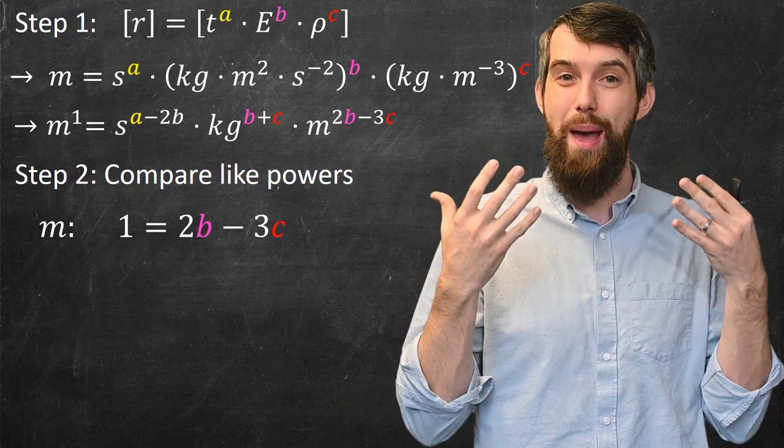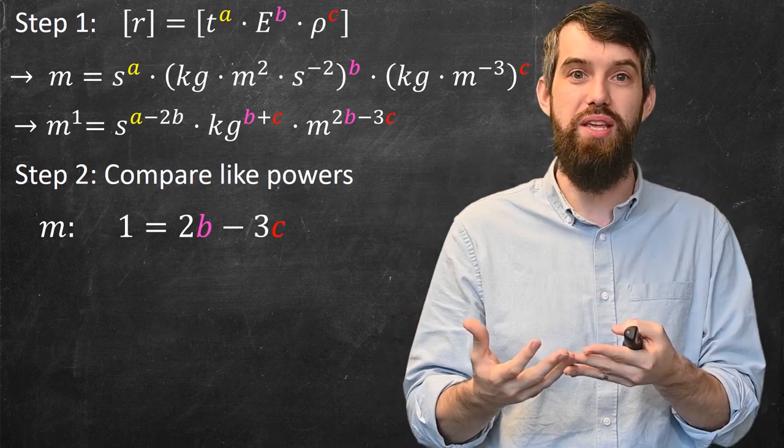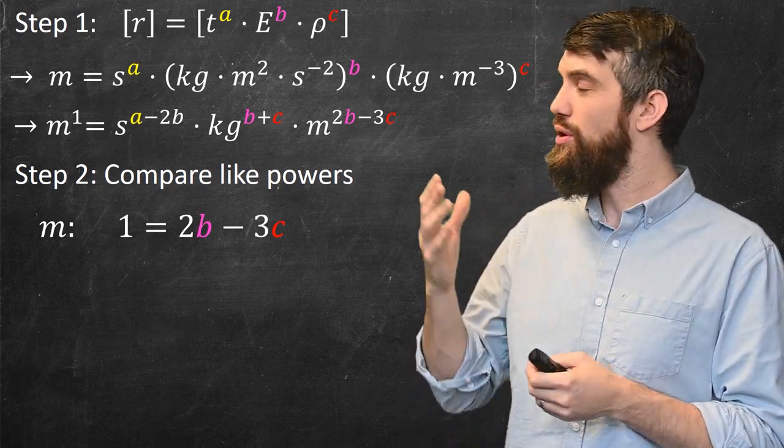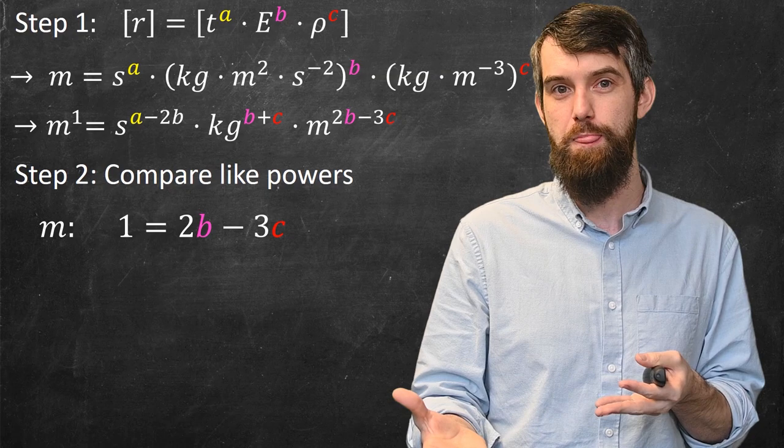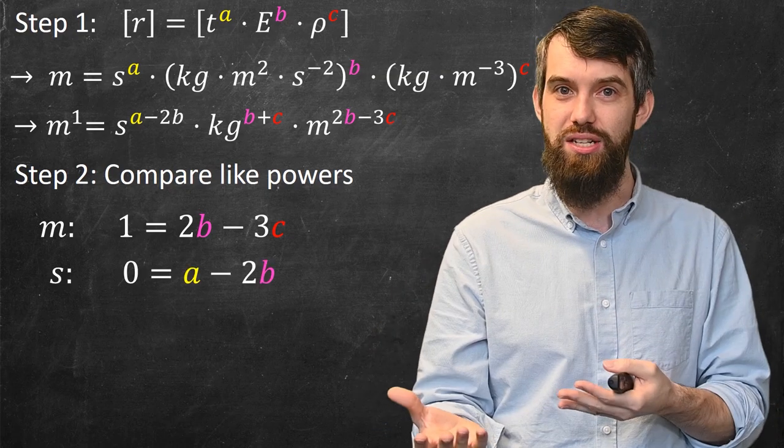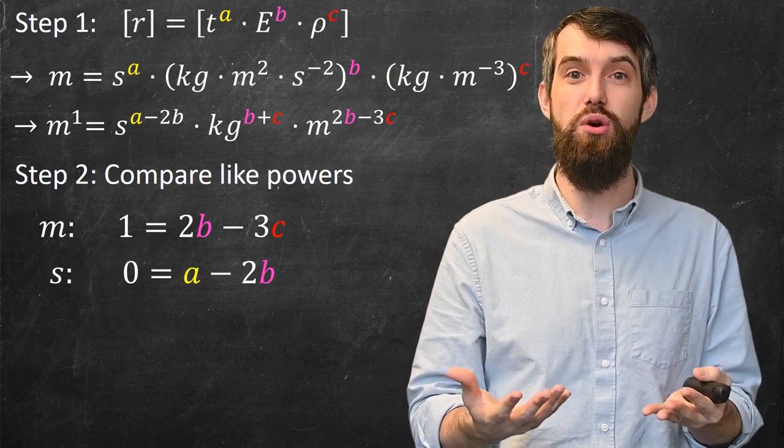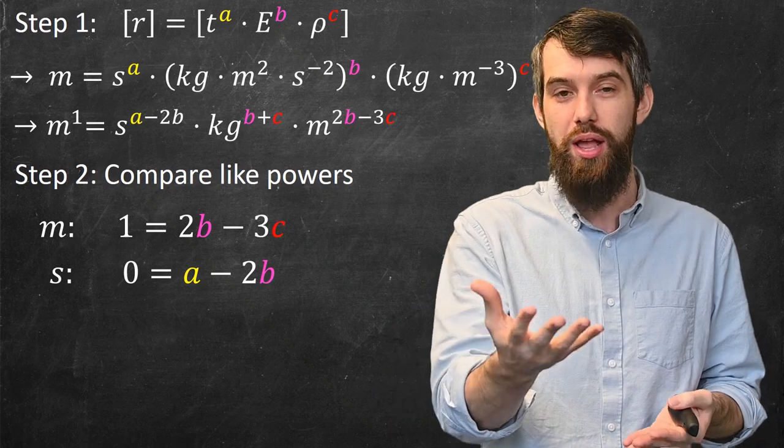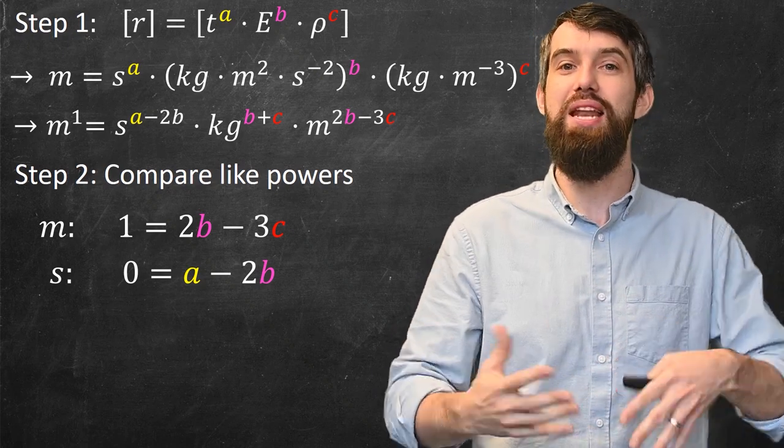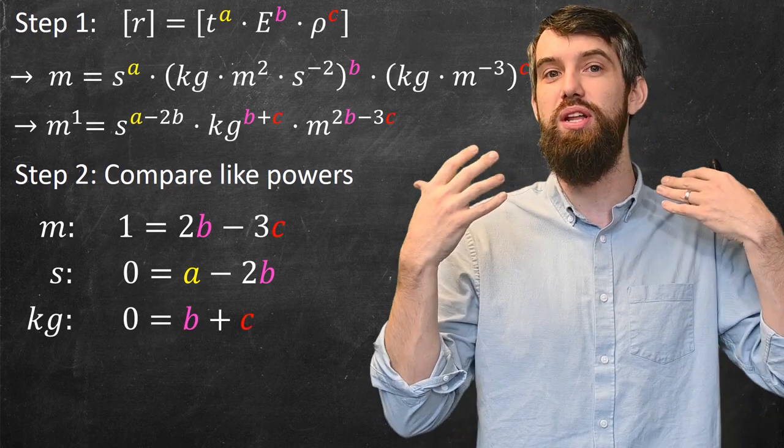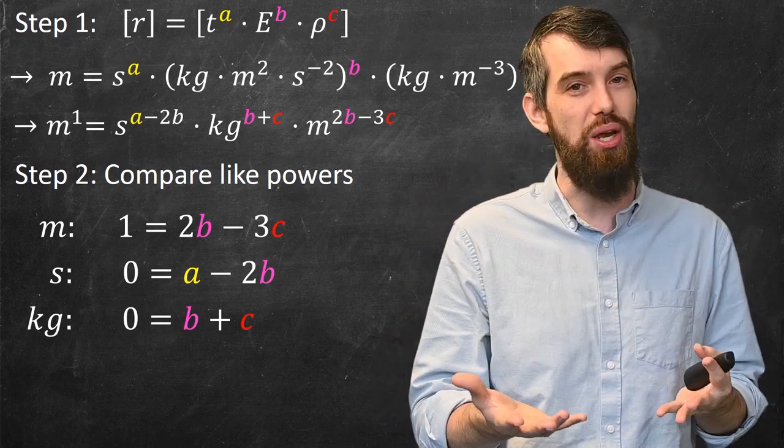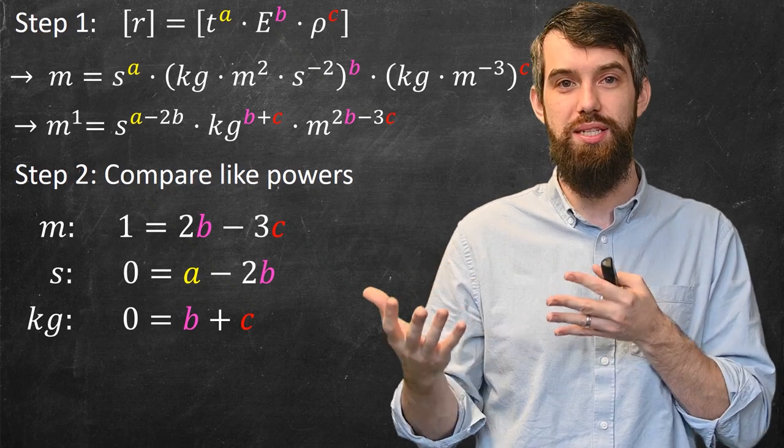First of all, if I compare the powers for meters, on the left-hand side I just get one. And then on the right-hand side, when I look at the power over m, it's 2b minus 3c. Next up, if I look at seconds, on the left-hand side there is no seconds, so its power is seconds to the zero. And then on the right-hand side, it was an a minus 2b is the power of seconds. And likewise, I can look at kilograms, I get similarly a zero on the left-hand side, there is no kilograms there, is equal to b plus c.